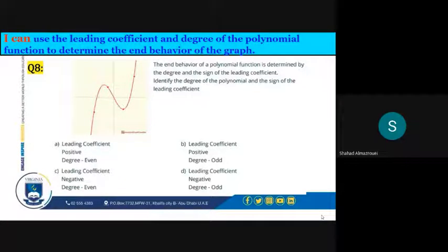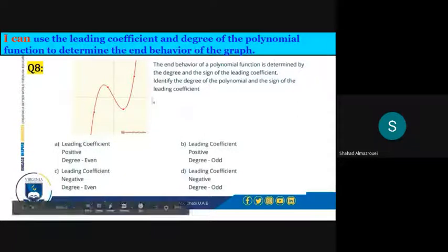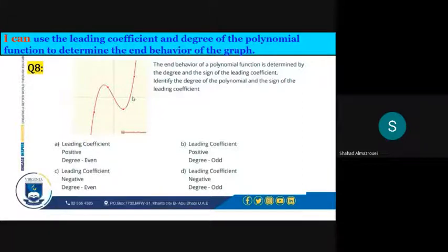This graph shows that the right side is going up and it's positive. It is on the right side of the x-axis. So that means that the leading coefficient is positive since the graph or the function is going up on the right side.